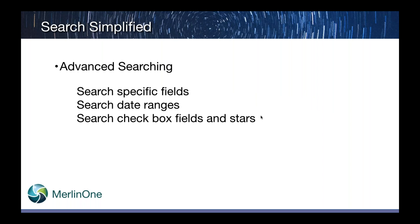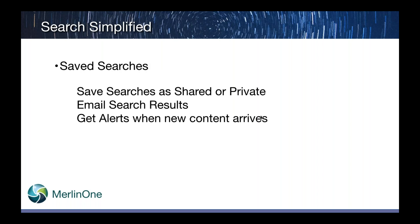For advanced searching, I'll show you how to search on specific fields, search for date ranges or specific dates and times, and how to search fields like checkboxes and star fields for ratings — all of those are searchable. I'll also show how you can save searches as shared or private, email search results to other users, and set up alerts to get email notifications when new content arrives in Merlin.